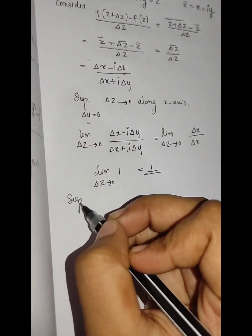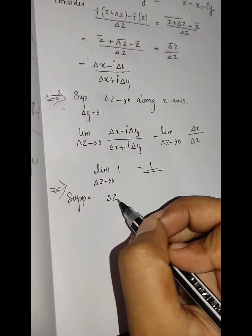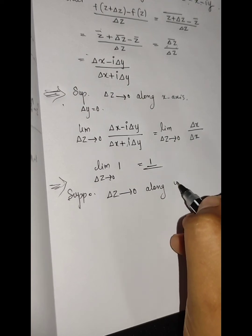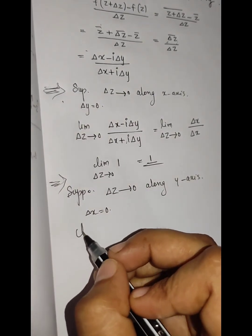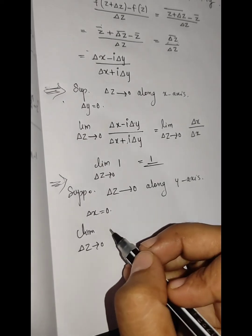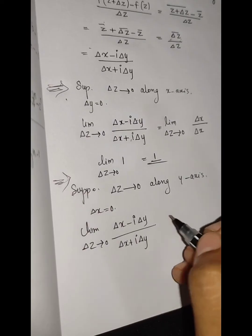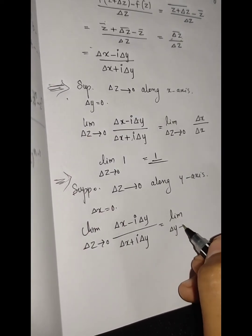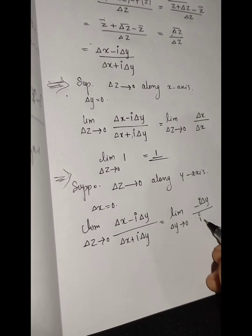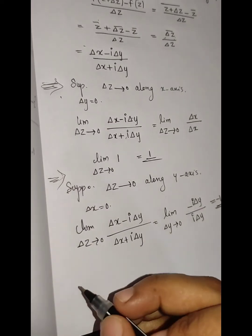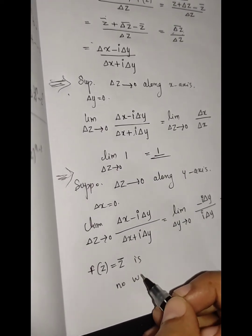This is the first part. Now the second part: suppose delta z tends to 0 along the y-axis, that is delta x equals 0. The expression becomes delta x minus i delta y divided by delta x plus i delta y, which simplifies to negative i delta y divided by i delta y.